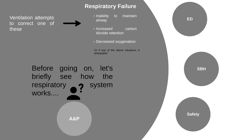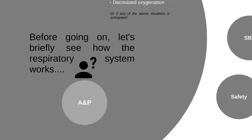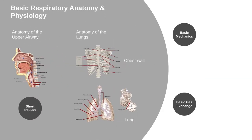Before we go into ventilation itself, it's important to understand how the respiratory system works, as it makes it easier to understand the principles of ventilation. The anatomy of the respiratory system starts from the upper airway, which is divided into the nasopharynx, the oropharynx, and the laryngopharynx.